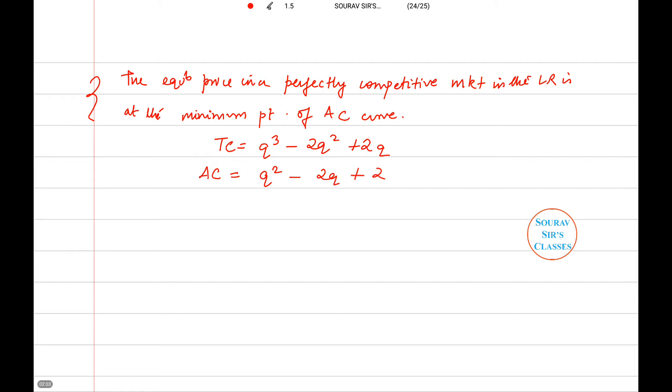Now to find the minimum point, we will differentiate this function with respect to q and set it equal to 0. So d(AC)/dq will be 2q - 2 equal to 0.